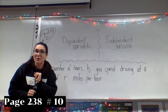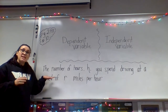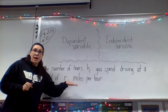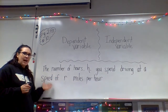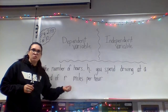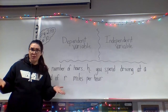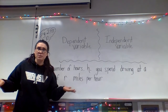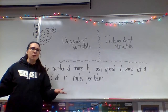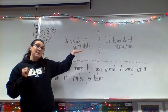The next problem is on page 238, number 10. This scenario talks about the number of hours spent driving at a speed of R miles per hour. You might wonder why R and not S — great question, because this is a rate: miles per hour. So R is used as the variable. Think about it: if we have to go 500 miles, what's going to determine how long we spend in the car or how fast we go? Which is the independent variable and which is the dependent variable?